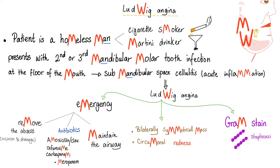We have clinical picture, diagnosis, and management. Clinical picture: bilaterally asymmetrical mass, circumoral redness. Diagnosis: Gram stain — made purple in color because streptococci are gram-positive, and gram-positive stains purple. Streptococci appear in chains.